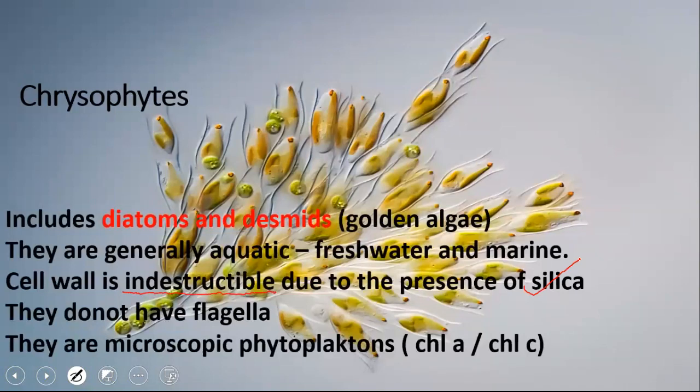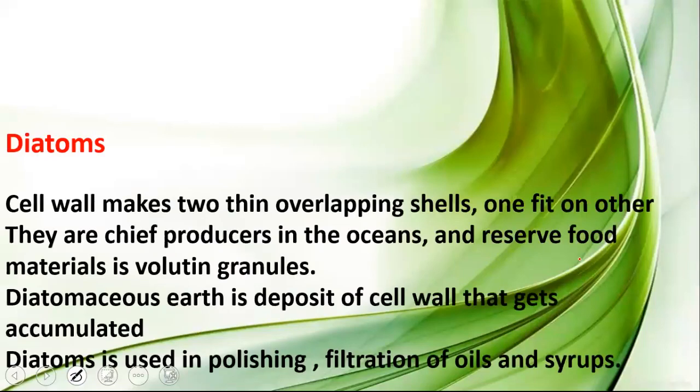Chrysophytes are microscopic and are considered phytoplanktons because they float with the current of water rather than actively swimming. They contain the chlorophyll pigments chlorophyll-a and chlorophyll-c.